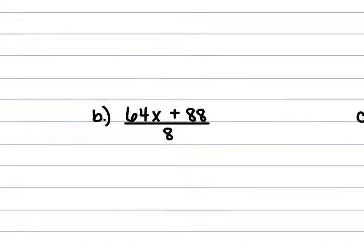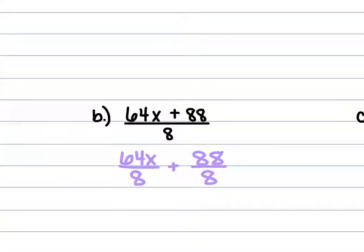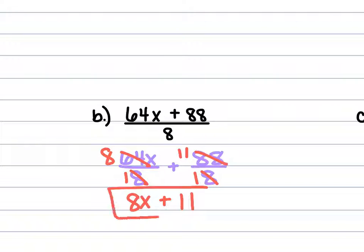For b, we have 64x plus 88, all over 8. So we're going to divide the 64x by 8 as well as the 88 by 8. The 64x divided by 8 is 8x, and the 88 divided by 8 is 11. So it's going to be 8x plus 11.